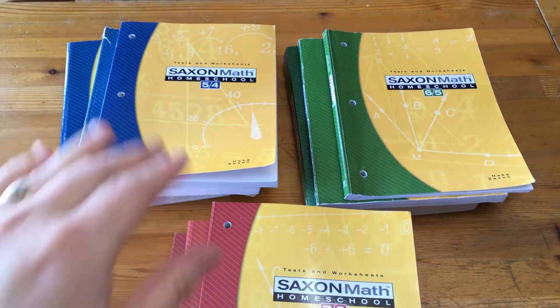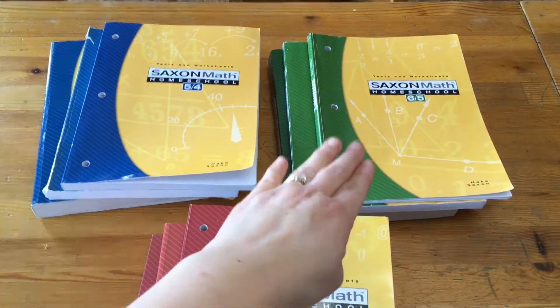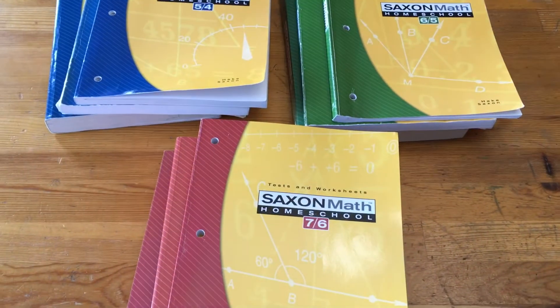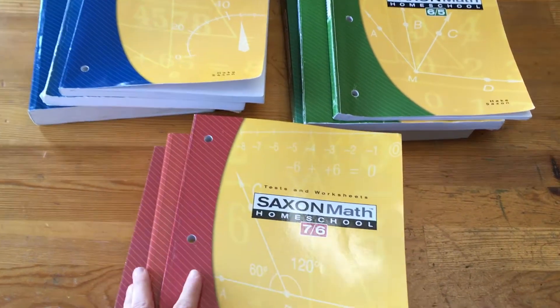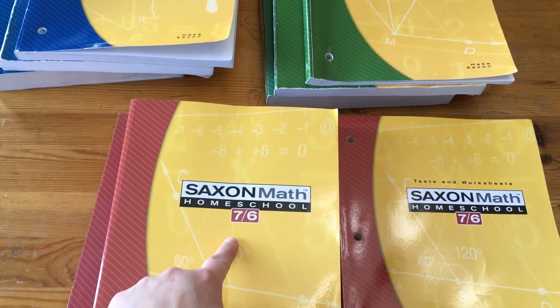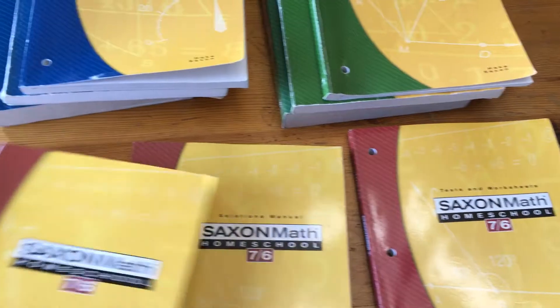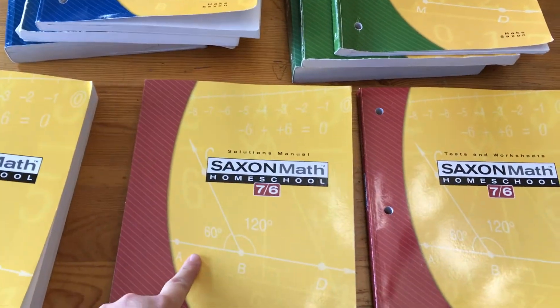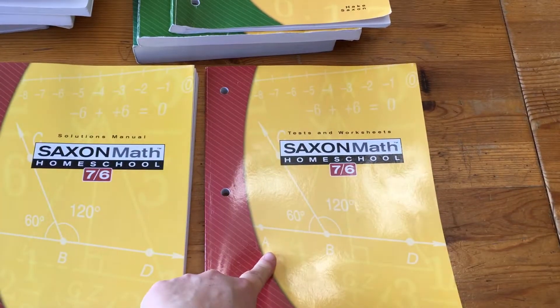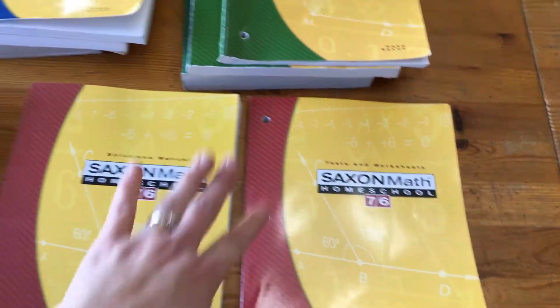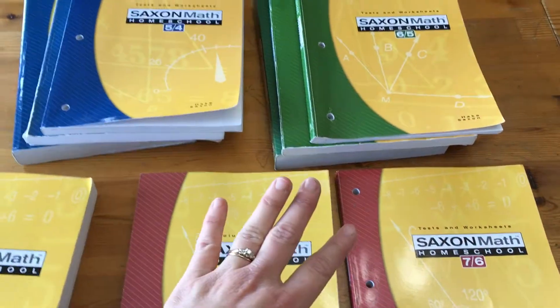So here's a really quick overview of the 5-4, 6-5, and 7-6. They all come in the same way. They come with the main book, the solutions manual, and the tests and worksheets. So I'm going to just go through each one and give you a quick explanation of them.